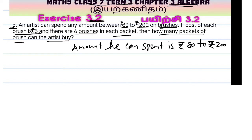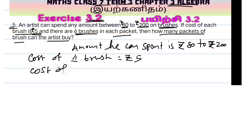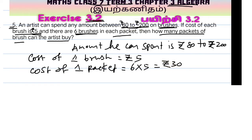Cost of one brush equals rupees 5. One packet has six brushes, so cost of one packet equals 6 into 5, that is rupees 30. In the given amount, how many packets of brushes can the artist buy?